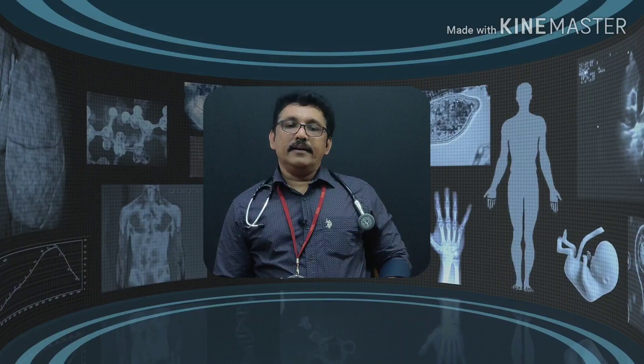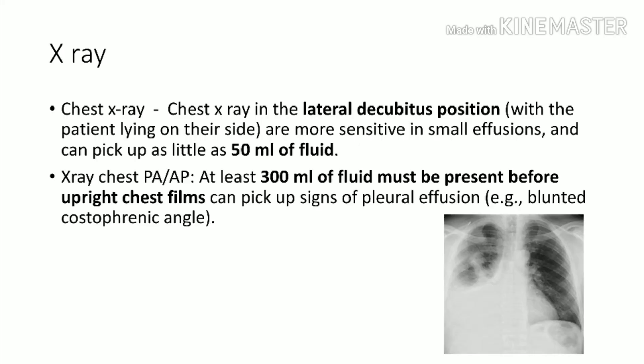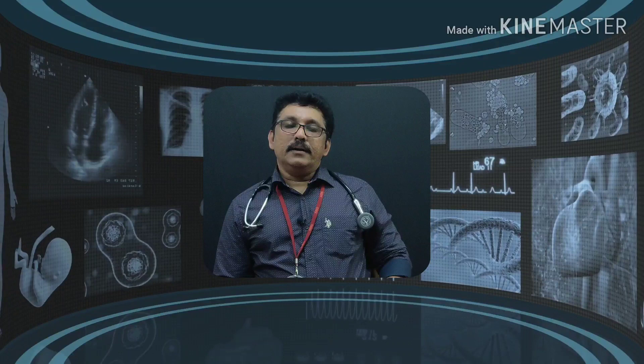The first-choice investigation is chest X-ray. A lateral decubitus X-ray can reveal minimal fluid — around 50 ml. A standard PA or AP X-ray will only detect pleural effusion if fluid is more than 300 ml. Clinical signs appear only when fluid exceeds 500 ml.